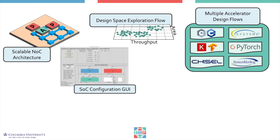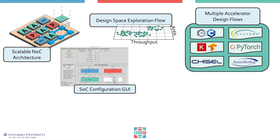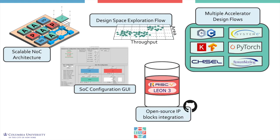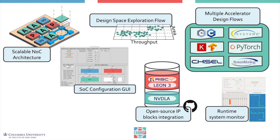Just fire up the ESP configuration GUI and pick and place your accelerators together with processor cores, memory tiles, and the generic I/O tile with all of the components necessary to boot a full system. Switch between SPARC 32-bit Leon 3 core or RISC-V 64-bit Ariane core. Configure the memory hierarchy and select which ESP performance counters and monitors you want to enable, then just push the configuration button.